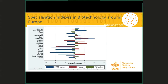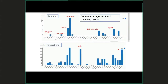Here's an example of one of the things we're trying to produce — these are specialization indexes in biotechnology around Europe. We're comparing whether a country is producing more in the way of projects, patents, or publications, comparing against different countries and looking at specializations. Here's another example comparing patents and publications by country on a particular topic, which is waste management and recycling. We can see some countries produce more patents, some produce more publications — again we are trying to connect the data together.